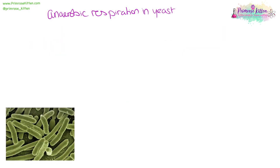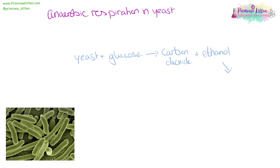Anaerobic respiration can also take place in yeast. Yeast will take the glucose and convert it into carbon dioxide and ethanol. Ethanol is used in drinks and cleaning products. And carbon dioxide is used for a variety of things — in the context of yeast, that carbon dioxide is what's going to make your cakes or your bread rise.